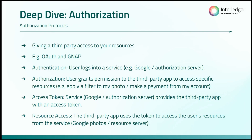The service you use to authenticate yourself — something like Google, or in our scenario your authorization server — once you've granted permission for the third party application to use your resources, the service will provide them with an access token. The third party will take that access token and be able to make a request directly to the resource server, showing that it actually has the authorization to make that request.